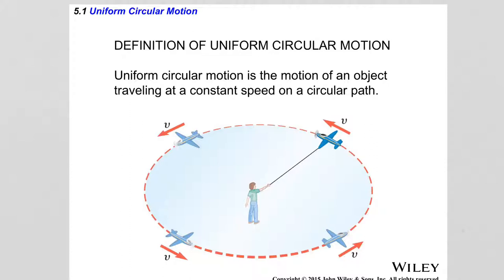Here is an example of such circular motion. We have a model airplane tied to a string and held by a person. Because the string is held in place at the center of the circle, the airplane goes around in a circle. The airplane is not constantly accelerating as it goes around the circular trajectory, so the speed with which the airplane is going is constant.